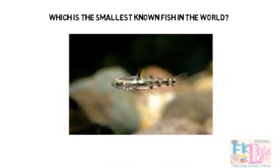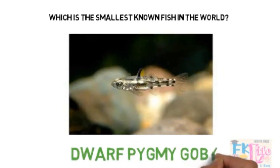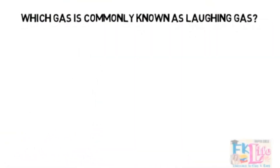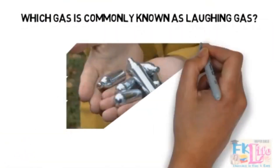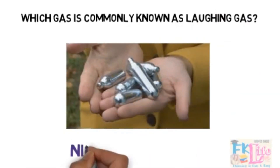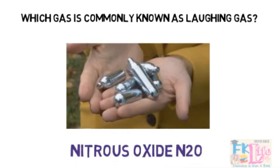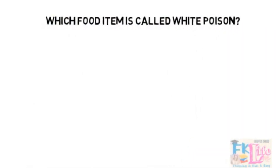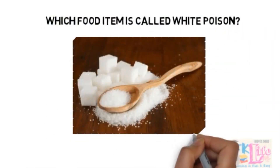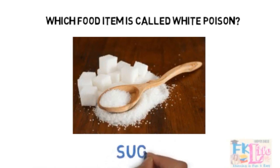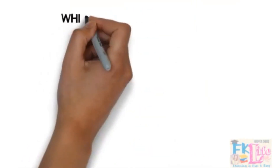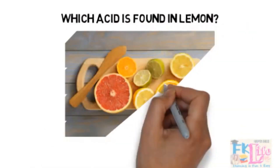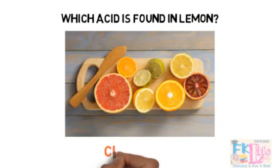Which is the smallest known fish in the world? It's the dwarf pygmy goby. Which gas is commonly known as laughing gas? It's nitrogen oxide, N2O. Which food item is called white poison? It's sugar — see how you should avoid it. Which acid is found in lemon? Citric acid.